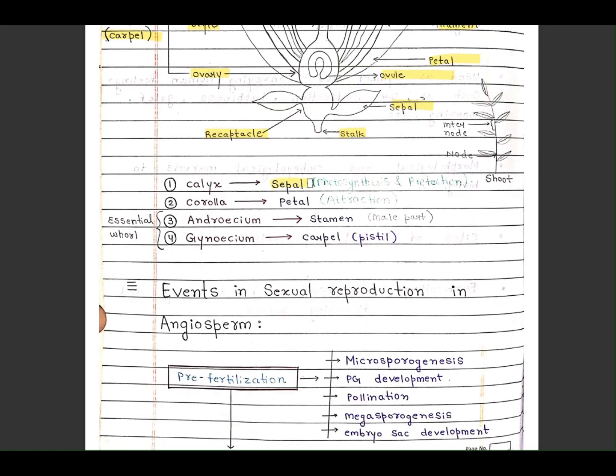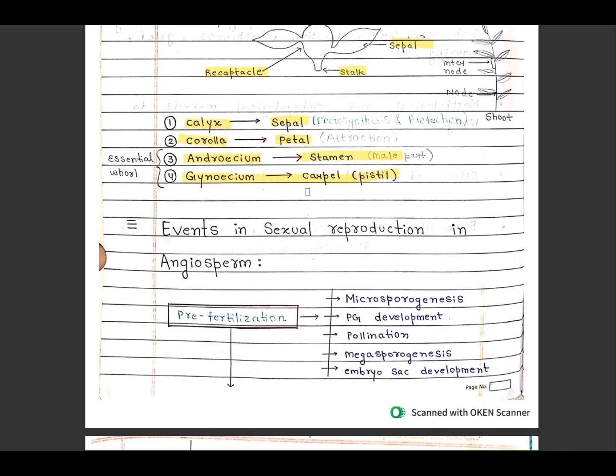Group of sepal is called calyx. Group of petals is called corolla. Androecium is the male part, that is stamen. Gynoecium is the female part, that is carpel or pistil. Calyx is used for photosynthesis and corolla is for attraction.